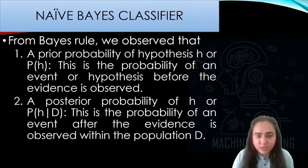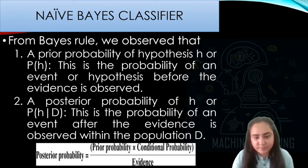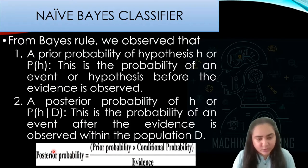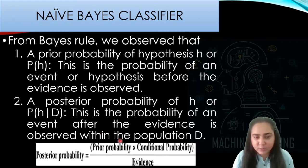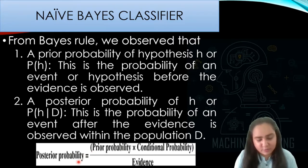The prior probability deals with probability before having any evidence available, but posterior probability talks about probability after seeing some evidence related to our dataset. This is the formula for Bayes' theorem, which talks about the posterior probability and the prior probability multiplied by conditional probability divided by evidence — P(A|B) = P(B|A) × P(A) / P(B).